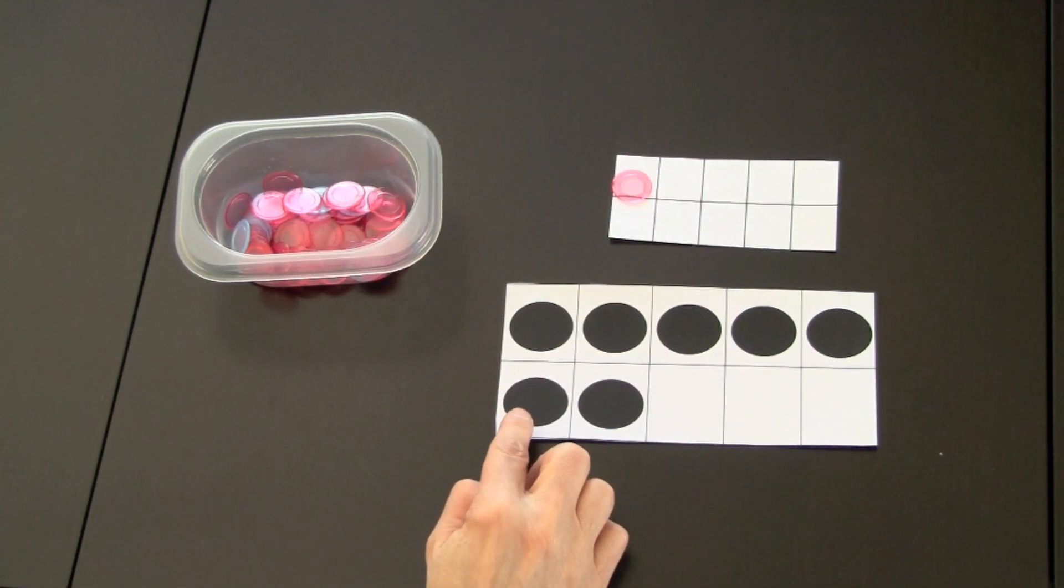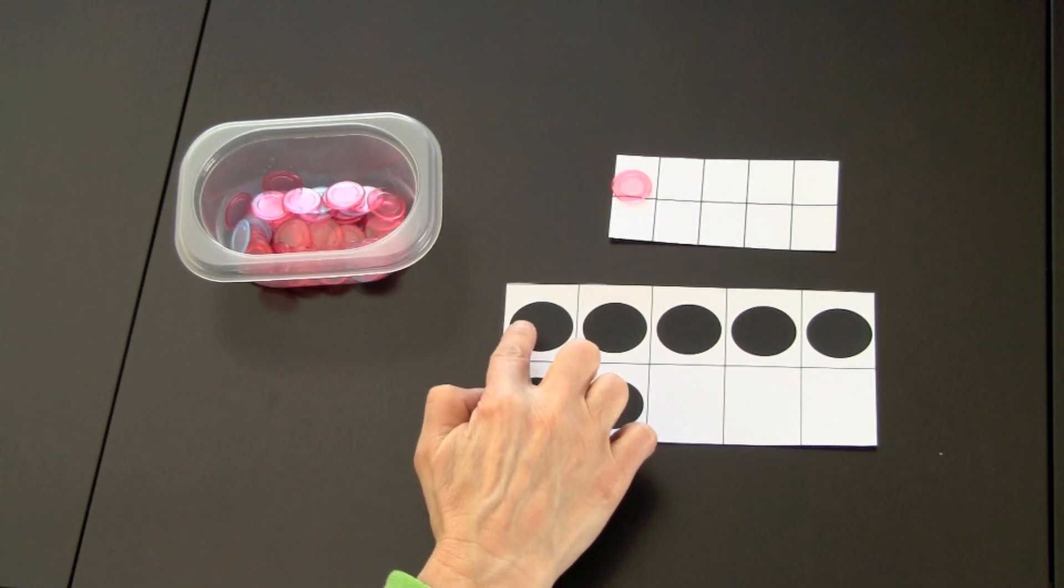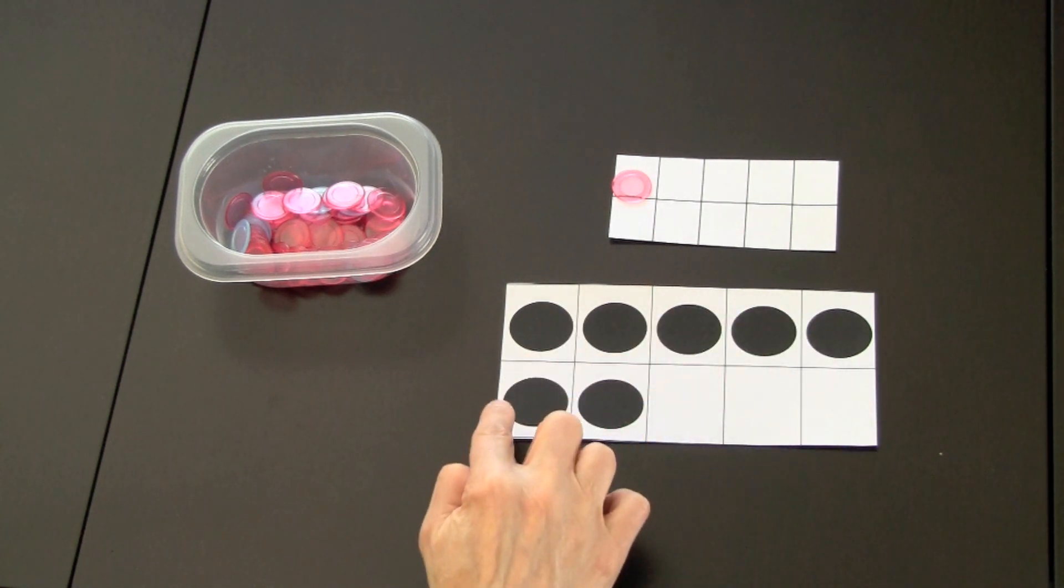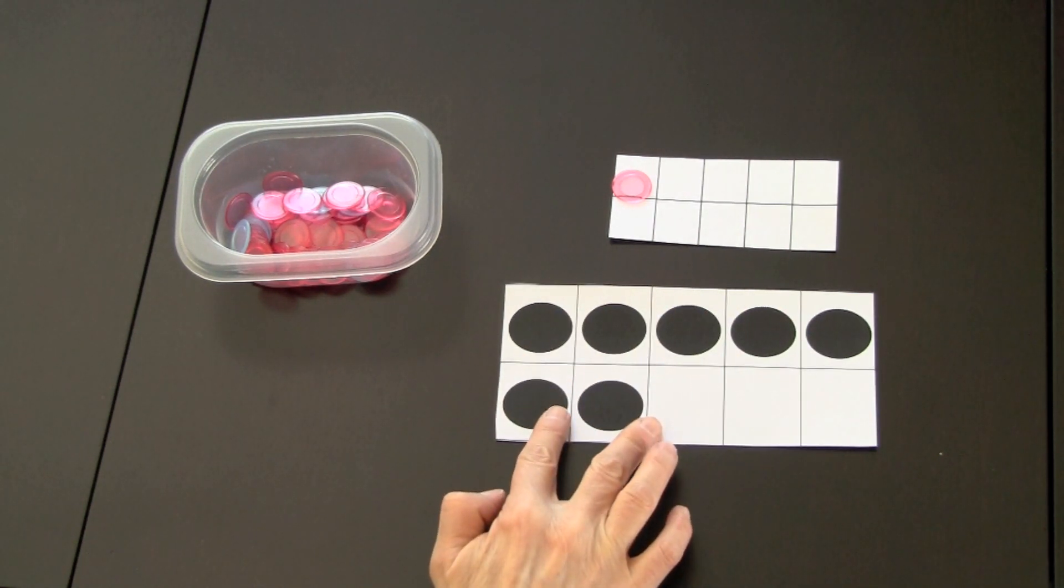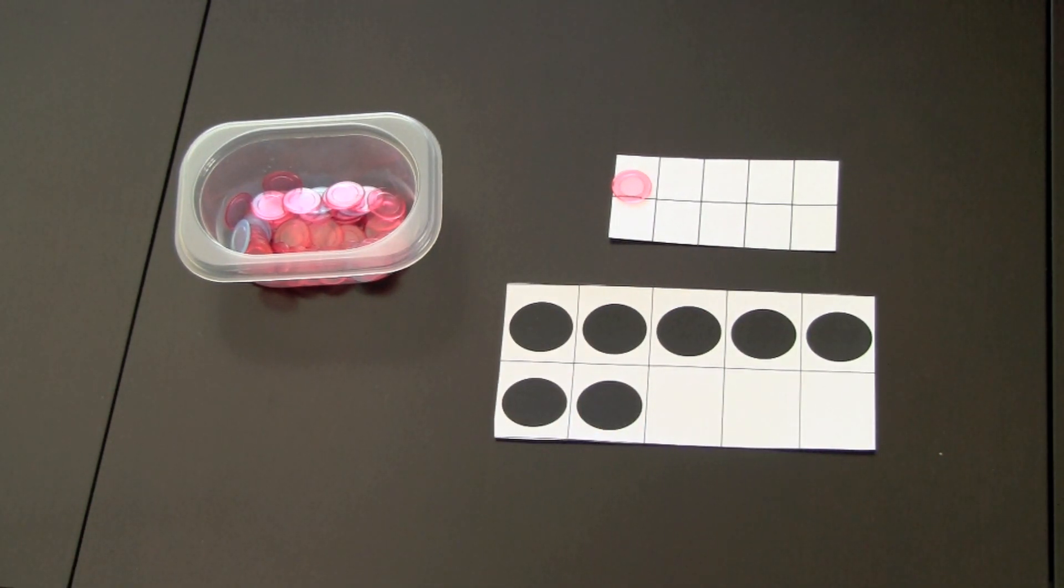Now in this program, the ten frame starts at the top from the left to the right and then from the left to the right. This corresponds with the reading process.